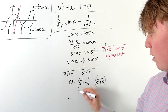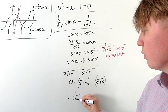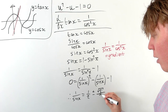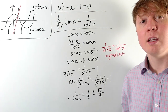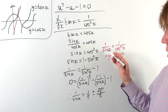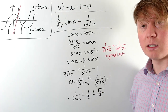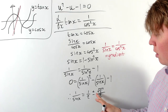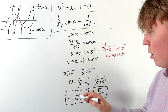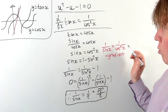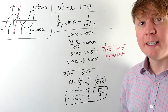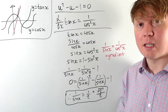The variable 1 over sin x satisfies this quadratic, giving solutions of a half plus or minus root 5 over 2. The positive solution is the golden ratio. We can rule out the negative solution because 1 over sin x equals 1 over cos squared x at the intersection point, so it must be positive. Therefore 1 over sin x equals the golden ratio, which equals the gradient of tan x where tan x and cos x meet.